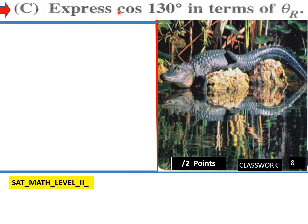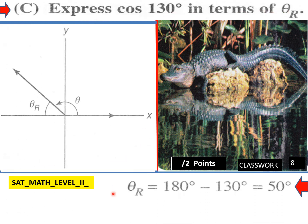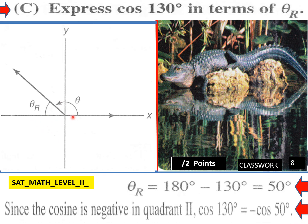Express cosine 130 in terms of theta reference. Cosine 130 is 40 degrees past the 90. The reference angle would be 180 minus 130, which is a 50 degree reference angle. Cosine represents the x-value. Cosine is negative in quadrant 2 because x-values are negative there. So cosine 130 equals negative cosine 50 degrees.